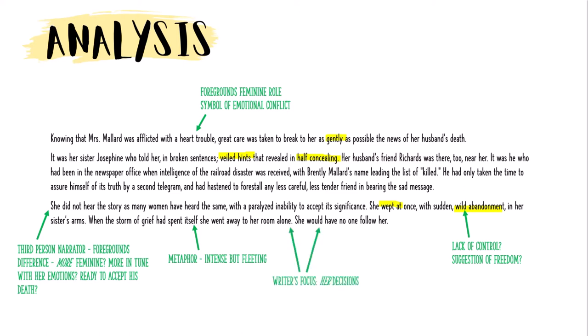Linked to that — the description of her going to her room alone, having nobody follow her. The writer's focus is on her decisions and her actions, and what those actions are is to be alone, which of course represents independence. She would have no one follow her — that's her control. The grief, where we said there was a sense of lack of control, has gone. Now suddenly she is in control. She is choosing to have no one follow her. That verb — 'she would have no one follow her' — she is making the decision, she is in control.